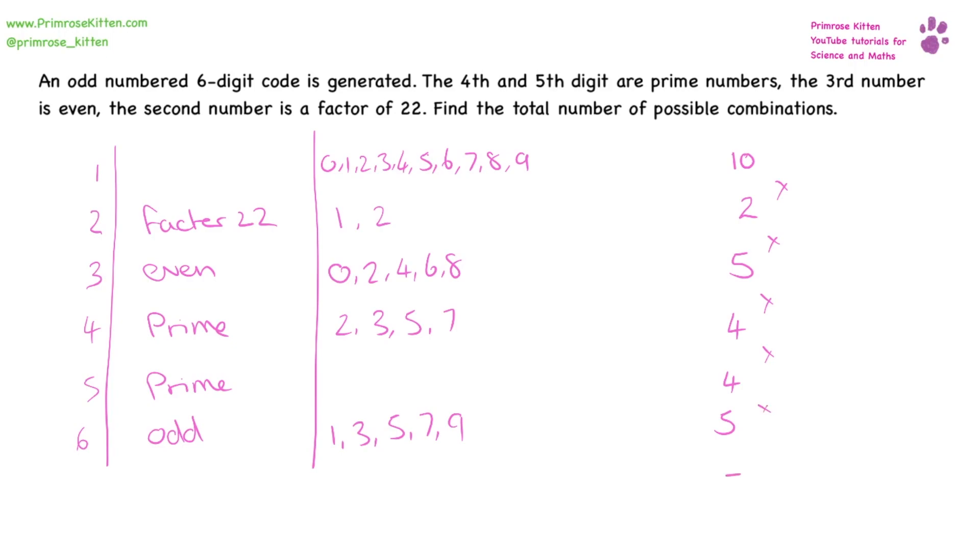Then we need to multiply all those together. So 10 times two times five times four times four times five that gives us 8,000 possible combinations.